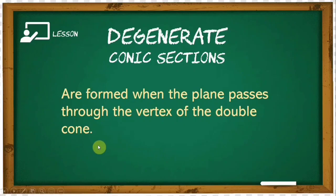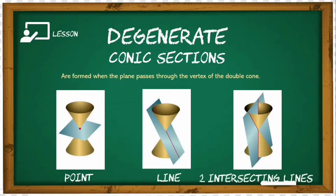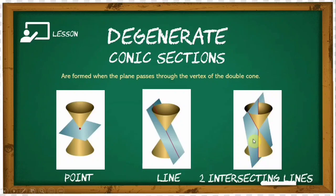We have three types of degenerate conics. The first is the degenerate ellipse or degenerate circle, also known as the point. The second is the degenerate parabola, known as the line. And the third is the degenerate hyperbola, known as two intersecting lines.